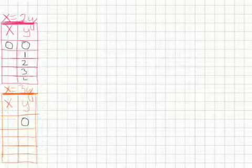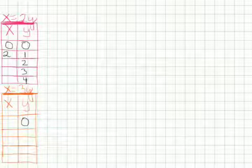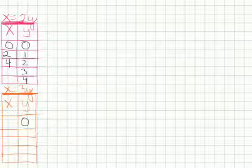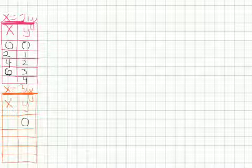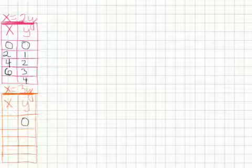We can fill in the next numbers. If y were 1, then 2 times y or 2 times 1 would be 2. If y were 2, then 2 times y would be 4. It looks like a pattern is emerging. If y were 3, then 2 times y would be 6. And if y were 4, then 2 times 4 would be 8 for x.